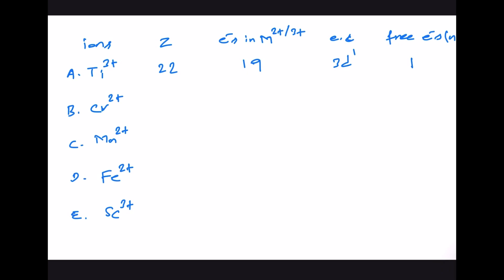For Cr²⁺, the atomic number of chromium is 24. In Cr²⁺ we have 22 electrons in total, and the electronic configuration is 3d⁴ (18 + 4 = 22), giving 4 unpaired electrons.